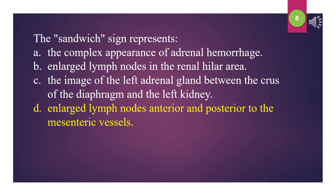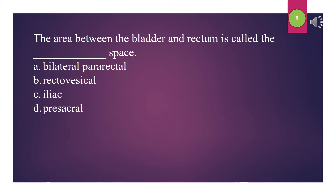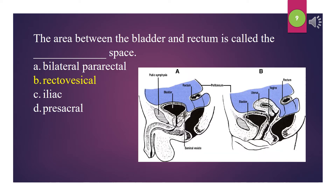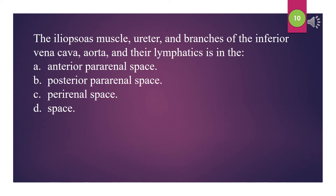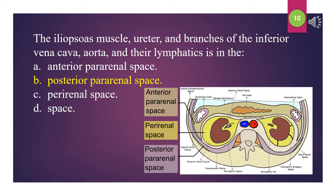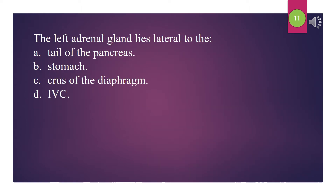Enlarged lymph nodes anterior and posterior to the mesenteric vessels. The area between the bladder and rectum is called what space? A. Bilateral pararectal. B. Rectovesical. C. Iliac. D. Presacral. The answer is B: Rectovesical. The iliopsoas muscle, ureter, and branches of the inferior vena cava, aorta, and their lymphatics are in the: A. Anterior pararenal space. B. Posterior pararenal space. C. Pararenal space. D. [Other] space. The answer is B: Posterior pararenal space.